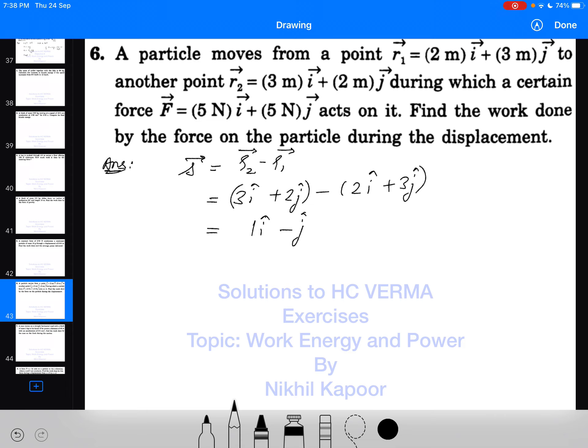Now what is work done? Work done is the dot product of force and displacement. So it will be force (5i + 5j) dot product with displacement (i - j).